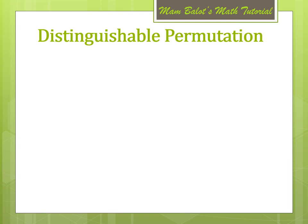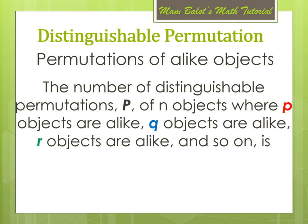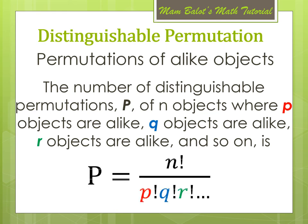Another kind of permutation is distinguishable permutation. This exists when we have alike objects. The number of distinguishable permutations P of N objects, where P objects are alike, Q objects are alike, R objects are alike, and so on, is computed as N factorial divided by P factorial times Q factorial times R factorial, and so on.